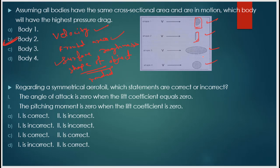Looking at all four figures, body 2 has a rectangular cross-section — it is not a rounded body. Less rounded means higher drag. Therefore body 2 has the highest pressure drag.